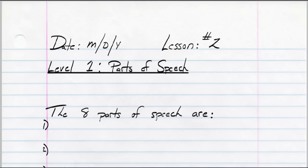So again, today's date, the word 'lesson,' and the number 2. After you've done that, skip a line. Then put the following words down and underline the whole thing. It should say 'Level 1, Parts of Speech.' Please make note that 'speech' is spelled S-P-E-E-C-H. Level 1, Parts of Speech — and again, underline that if you would.